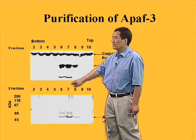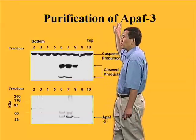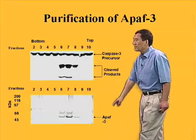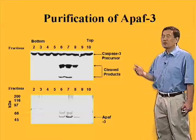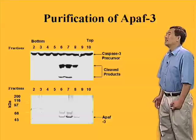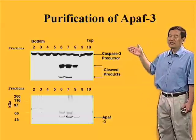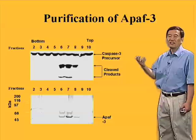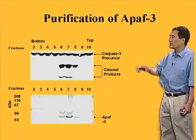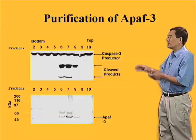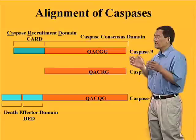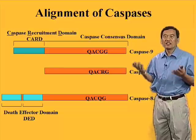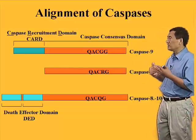The third factor, initially called APAF-3, was purified and identified as another caspase — caspase-9. This told us that caspase-3 activation actually occurs through a cascade of caspases, with caspase-9 as the upstream initiator caspase required for activation of the downstream caspase-3. This raised the question: what is the difference between caspase-9 and caspase-3 that makes caspase-9 an initiator and caspase-3 a downstream effector caspase?